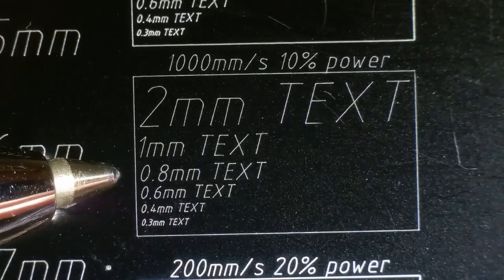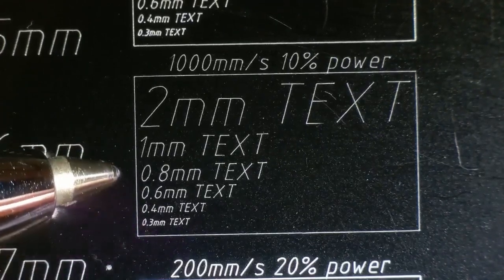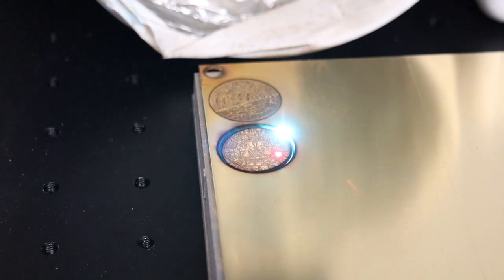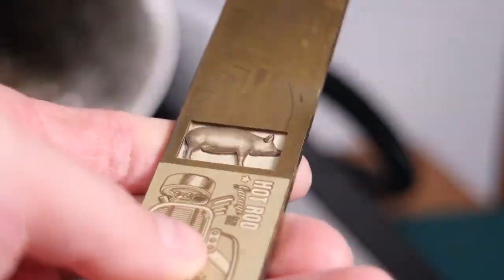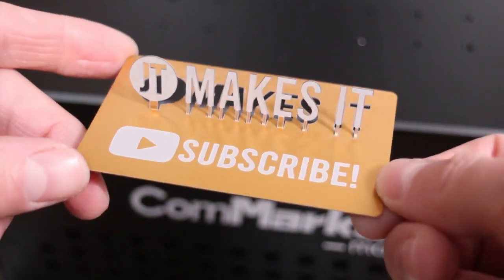Whether engraving delicate markings with exceptional detail on various types of plastics or aggressive cuts through thick metals, the Commarker does it with ease. In this video, you will learn what this machine can really do.